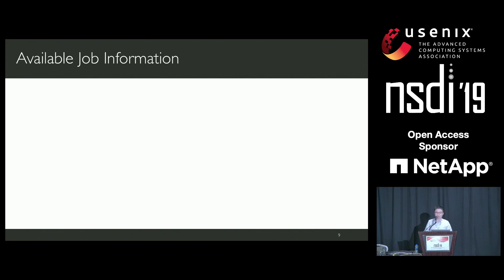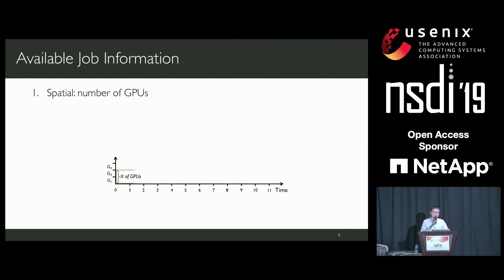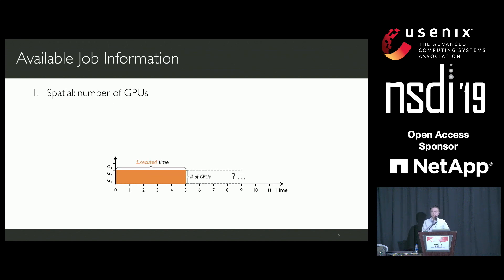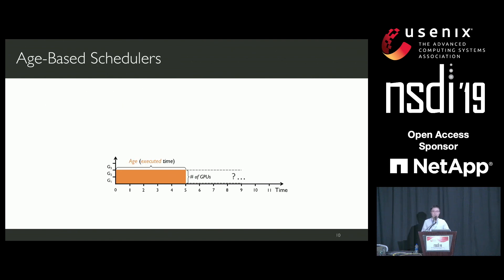In the spatial aspect, the GPU requirement of a job is always given by its user. However, in the temporal aspect, we have no idea how long a job is going to run. But once a job gets executed, our cluster manager can easily obtain information about the job's executed time, which is often called the job's age.